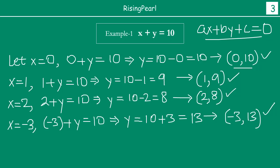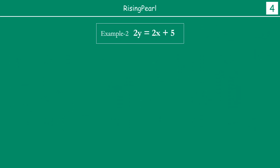Now let us take one other example and see if this is indeed true. This time, friends, we have the equation written in a slightly different format: 2y equal to 2x plus 5. Notice again this can be written as ax plus by plus c equal to 0, so this is again a linear equation in two variables.